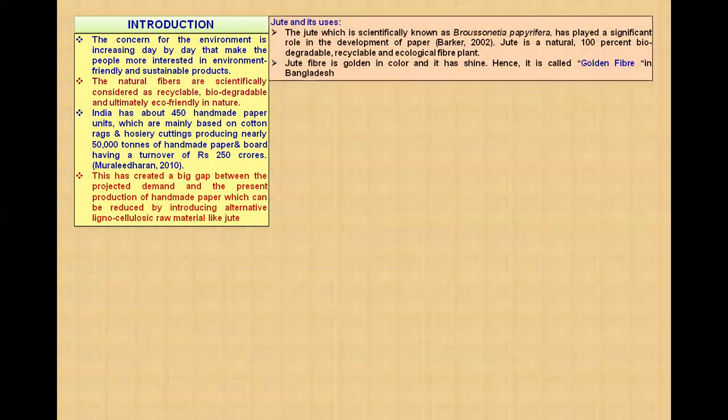We have already known jute and its uses. Jute, which is scientifically known as Broussonetia papyrifera, has played a significant role in the development of paper. It is 100% biodegradable, recyclable, and ecological fiber plant. It is called golden fiber because of its golden color, and it is growing more in Bangladesh.